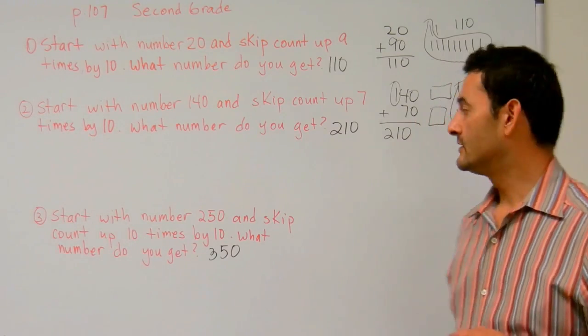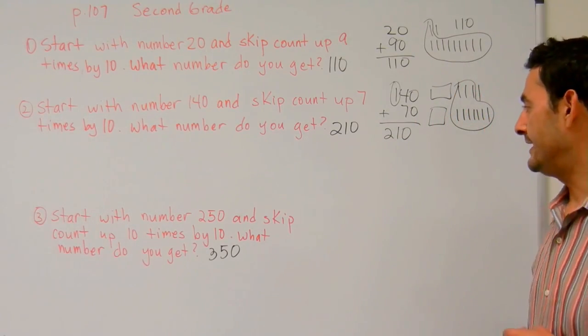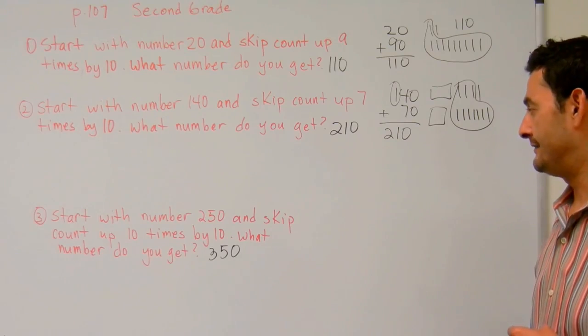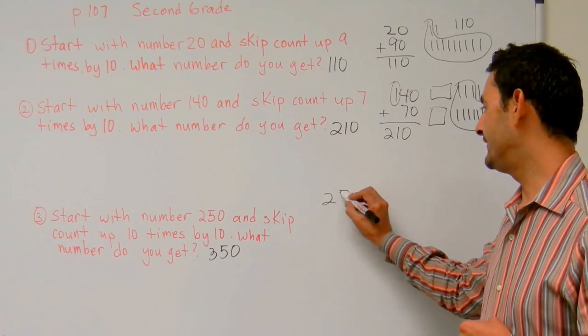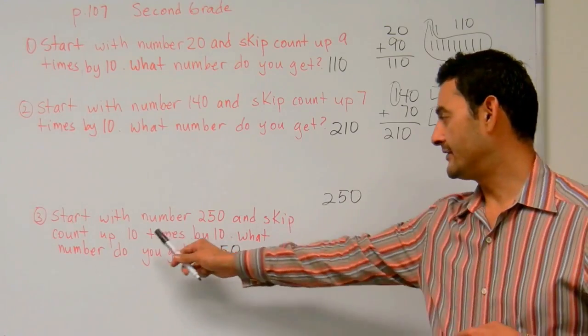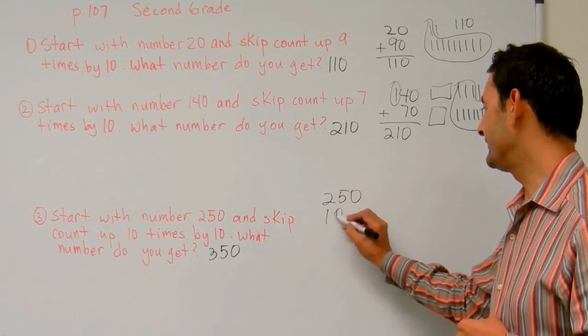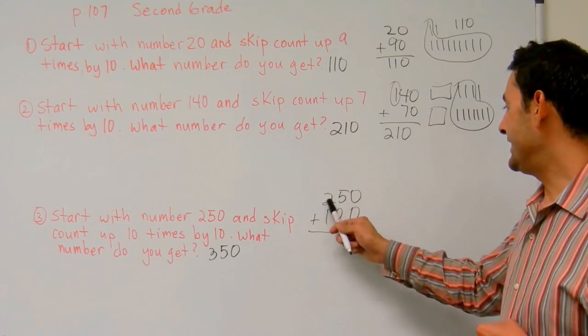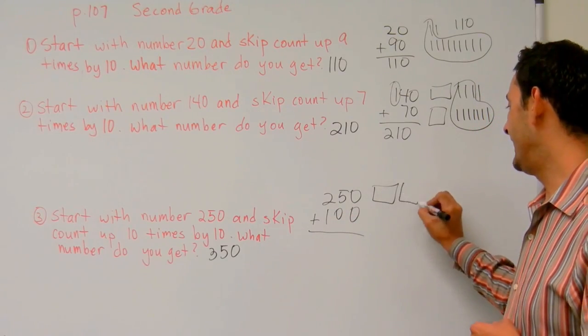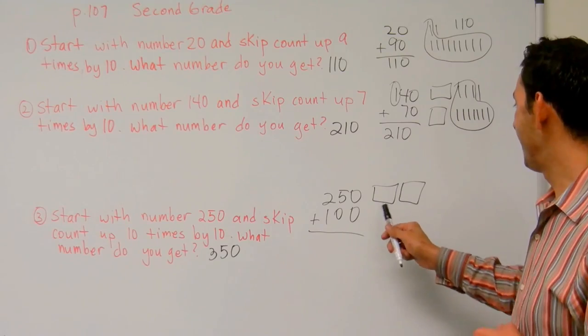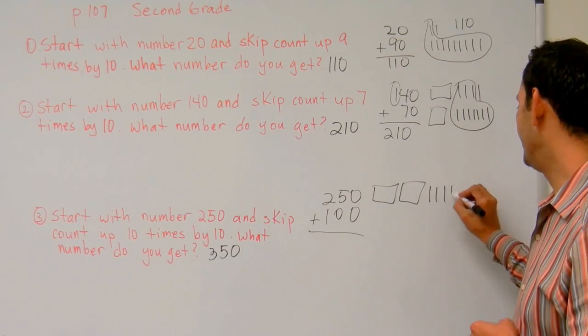Number three says, start with number 250 and skip count up ten times by ten. What number do you get? So we're going to start with 250. We're going to skip count up ten times by ten. What's ten times ten? That's 100. Here for 250 we have a bundle. We have two bundles of hundreds. And then we have five bundles of ten.